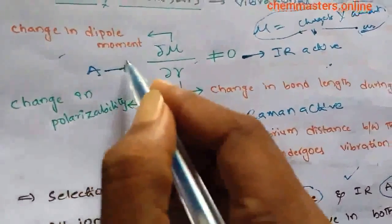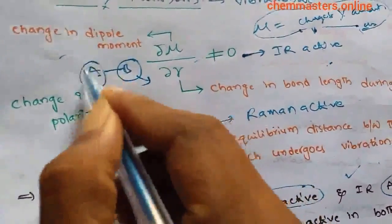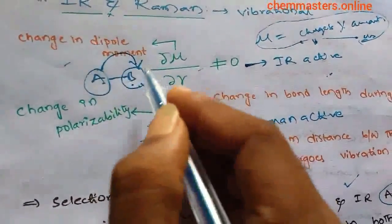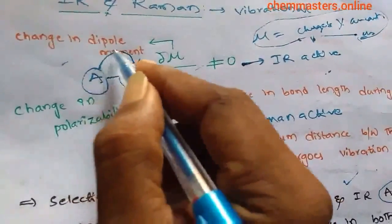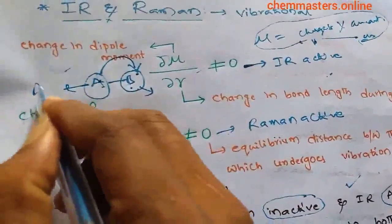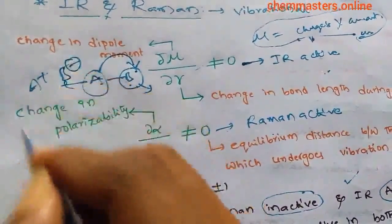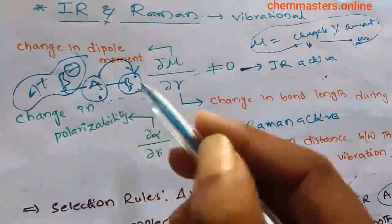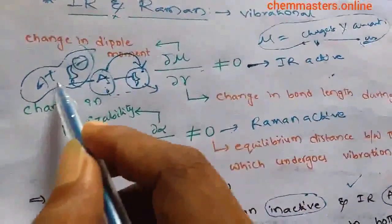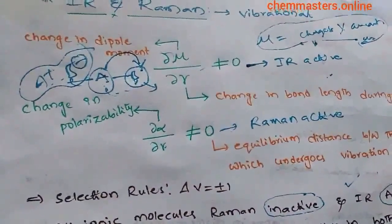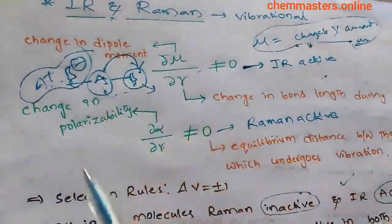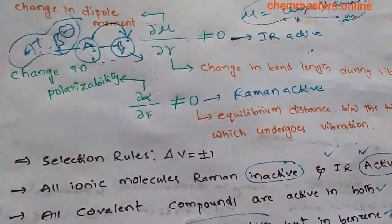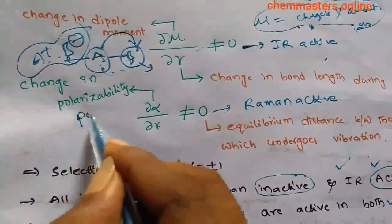If two atoms A and B are connected with a bond and B is more electronegative than A, B attracts or drags electrons towards itself. This forms A⁺ and B⁻ ions when the electronegativity difference is large — that is the formation of dipole moment. This is why all ionic molecules are IR active.